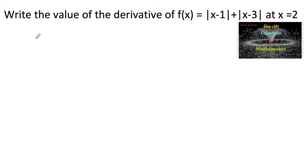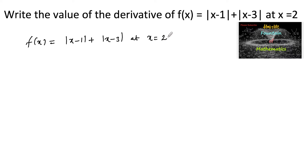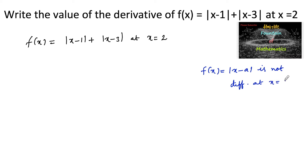Write the value of the derivative of f(x) = |x-1| + |x-3| at x = 2. We know that a function f(x) = |x-a| is not differentiable at x = a.